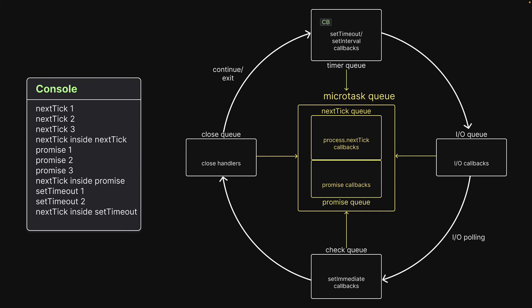To answer a question you might have — yes, this check did happen after the first callback as well, but the microtask queues were empty and thus did not make a difference. Now that the microtask queues are empty, control goes back to the timer queue. The last callback is executed, resulting in the setTimeout3 message in the console.